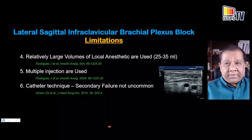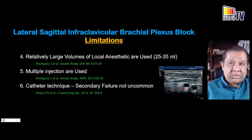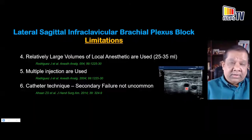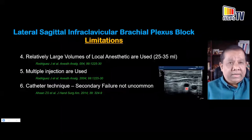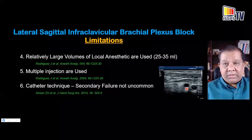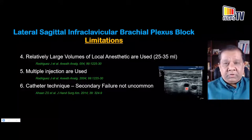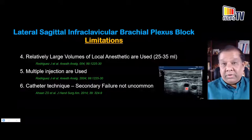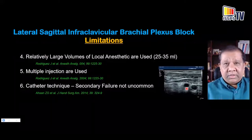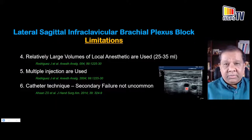When using a catheter, it is usually placed at the posterior part of the axillary artery, around six o'clock, inserted from cranial to caudal. A large primary bolus provides effective initial blockade, but during postoperative infusions of six to ten mils at 0.1 to 0.2 mls per kilo per hour, there is often regression of the primary block and secondary block failure in the territories of the lateral or medial cord. Secondary block failure is a very common limitation of lateral sagittal infraclavicular continuous techniques.